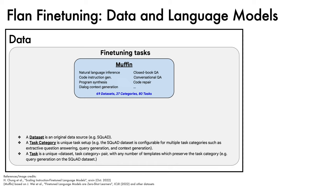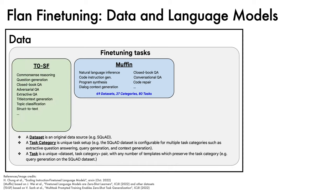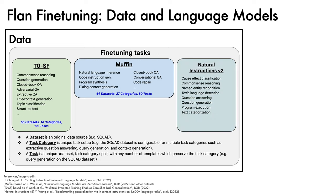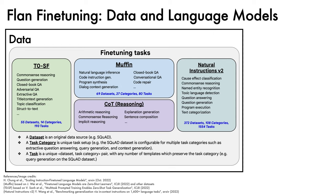The second data source is T0SF, short for T0 sans Flan, which uses the tasks from the T0 work but removes those that fall within Muffin. This contributes a further 55 datasets, 14 categories, and 193 tasks. Third, there is Natural Instructions v2, adding a further 372 datasets, 108 categories, and 1,554 tasks. Finally, there is a mixture of chain-of-thought reasoning data, built from 9 datasets, a single task category, and 9 tasks. These make use of manually written chain-of-thought annotations.